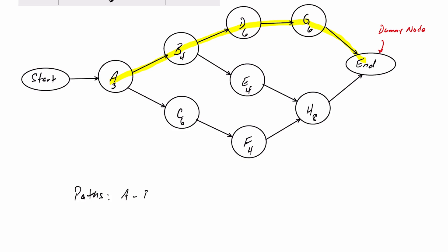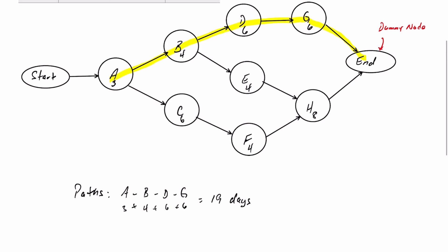We have path A, B, D, and G. And what we can also do at the same time is determine how long or how many days it takes if we went along that path. So A is 3 days, B is 4, D is 6, plus 6. That's a total of 19 days. So path A, B, D, G is 19 days.